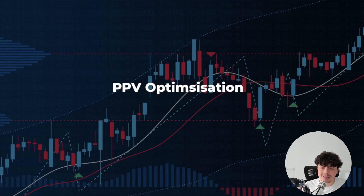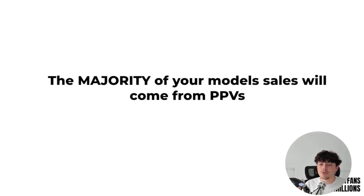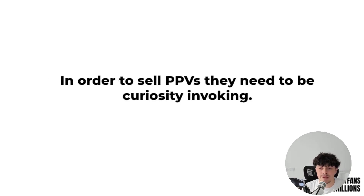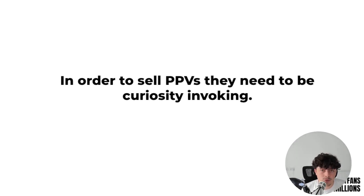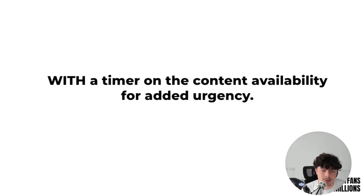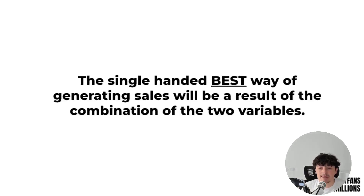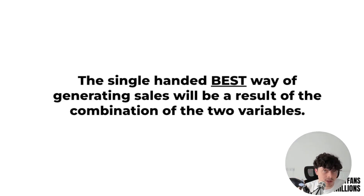Now let's talk about pay-per-view optimization. The majority of your model's sales will come from pay-per-views — from the actual messages that subscribers are buying. In order to sell pay-per-views, you need to be curiosity-invoking, because without that curiosity element they're not going to purchase. You also need a timer on the content availability for added urgency. The single best way of generating sales is the combination of those two variables.